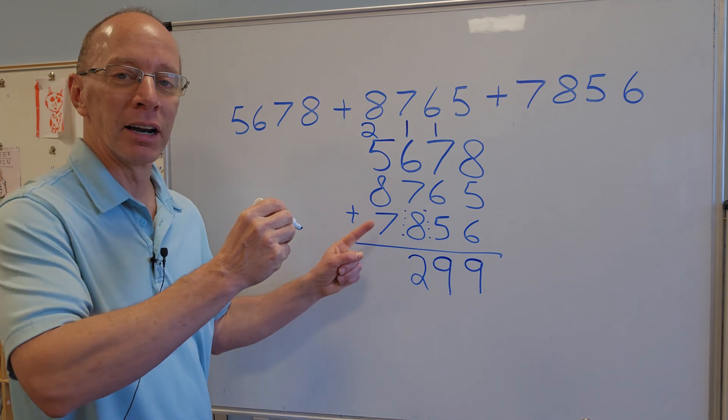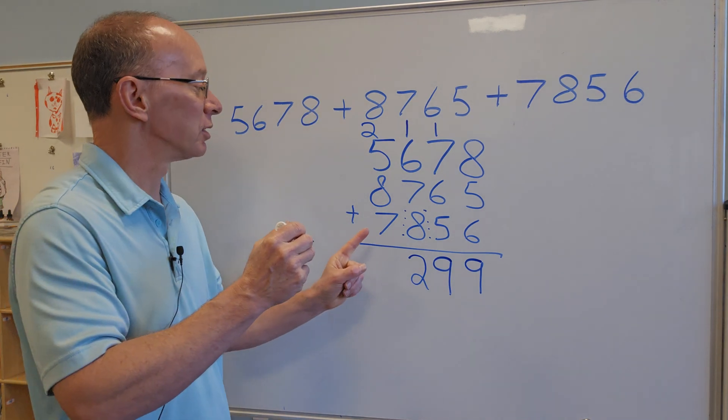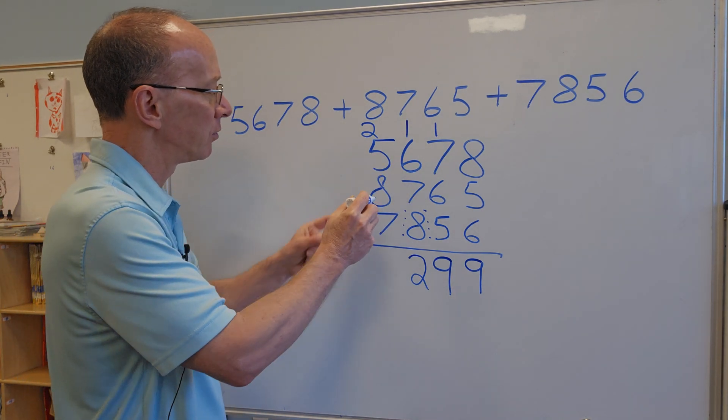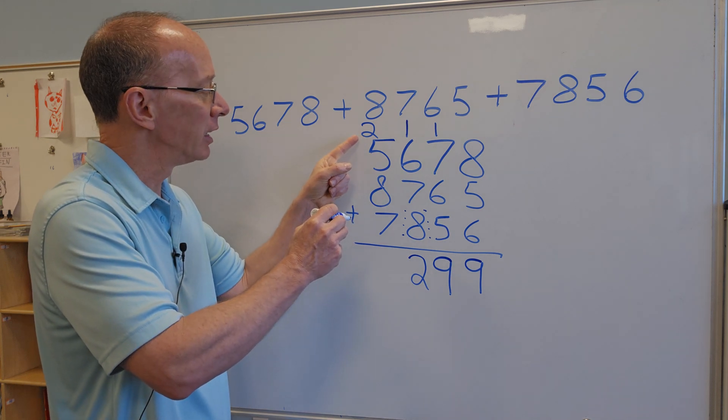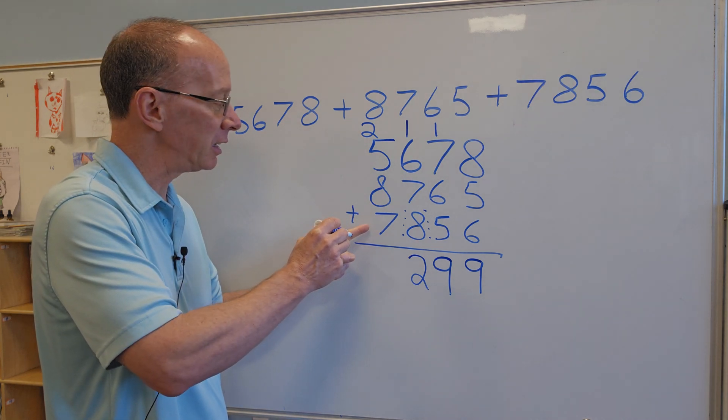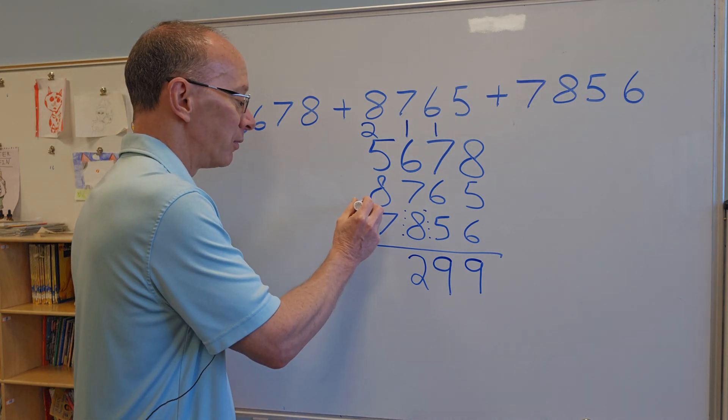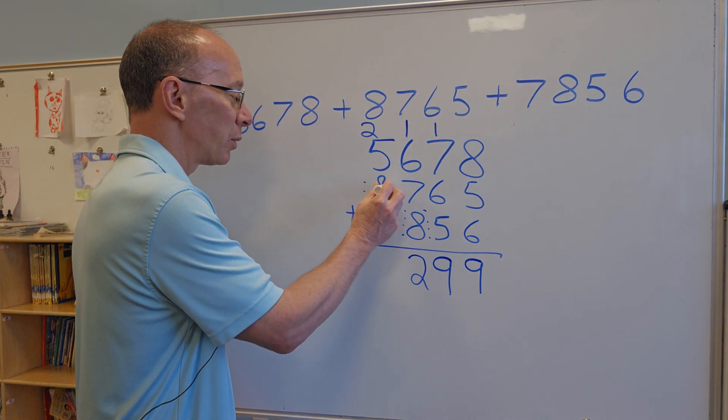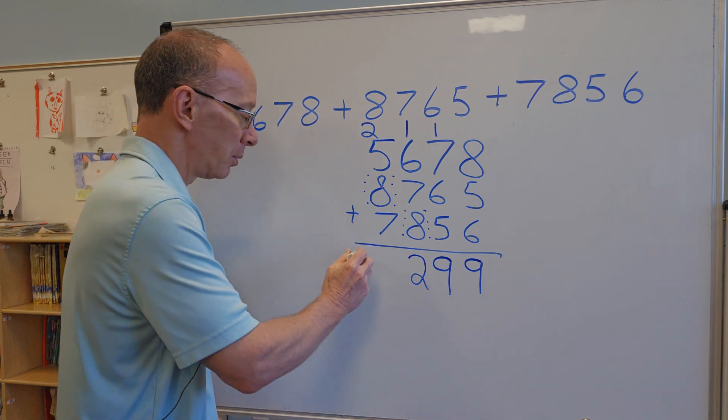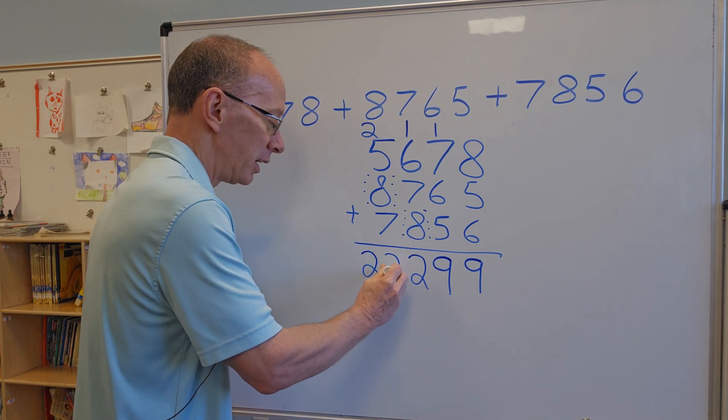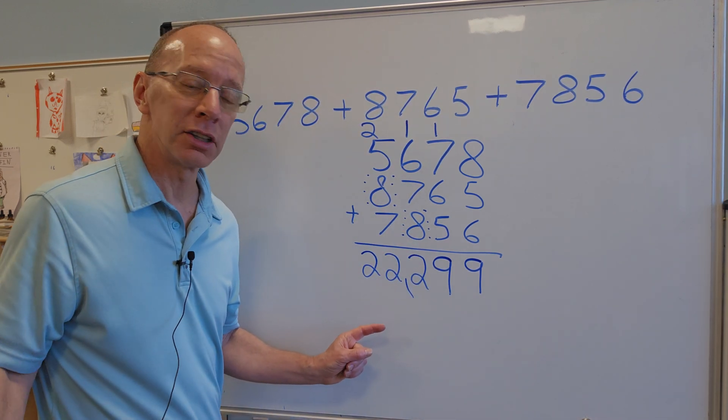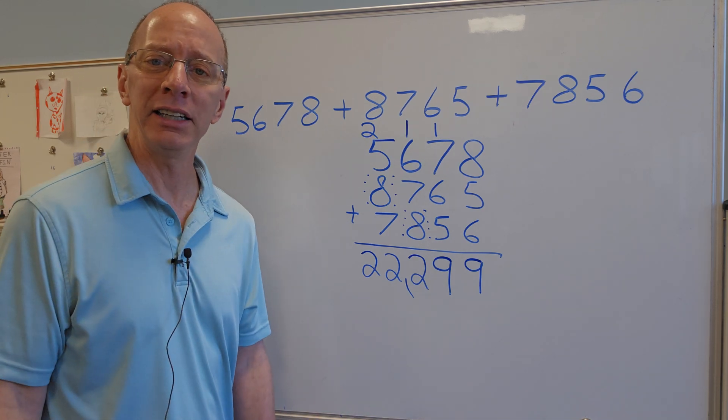And then I'm going to add the thousands right now. So let's see if we have a double fact. 5 and 2 is 7, and then 7 plus 7 is 14. Again, 14 plus the 8, so it'd be 15, 16, 17, 18, 19, 20, 21, 22. So I put the 22 down here. And so my answer is 22,299.